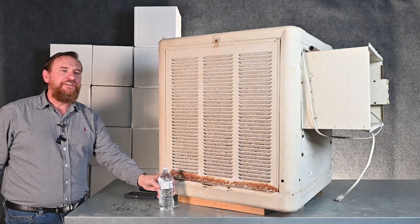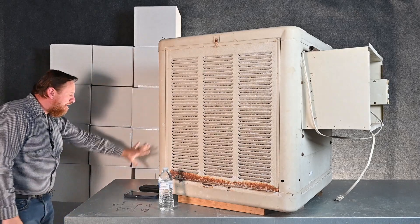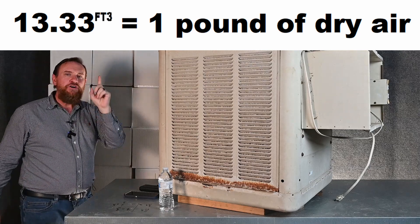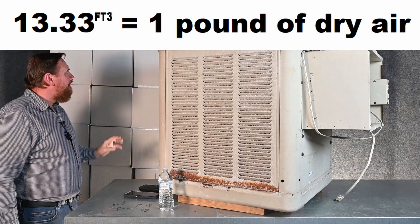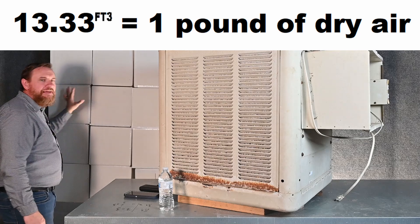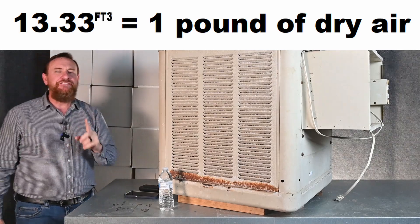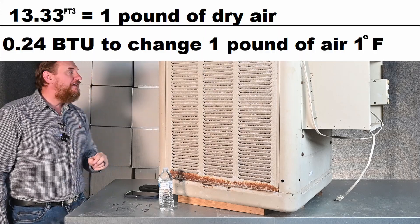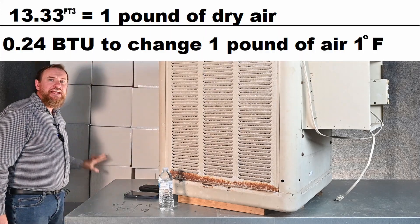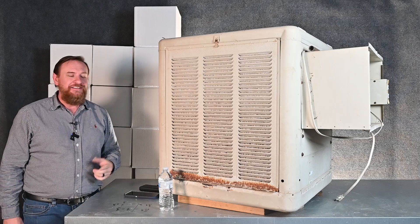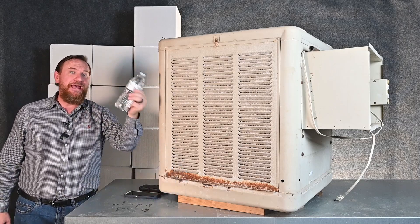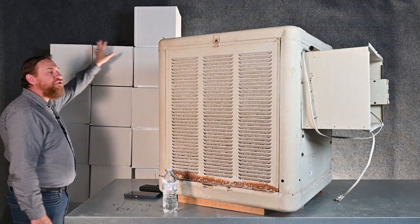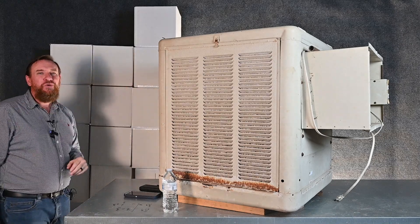Now let's look at that BTU factor. It takes 13.33 cubic feet of air to have 1 pound of air. It only takes 0.24 BTUs to change 1 pound of air 1 degree Fahrenheit. It took 1 BTU to change 1 pound of water 1 degree Fahrenheit, but it only takes a quarter of a BTU to change 1 pound of air 1 degree Fahrenheit.